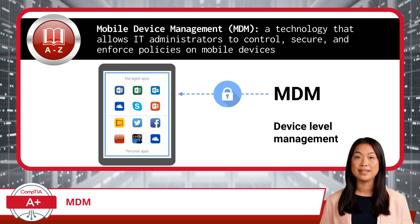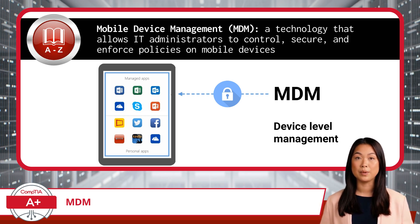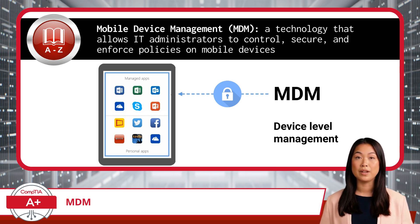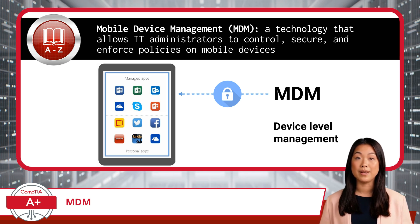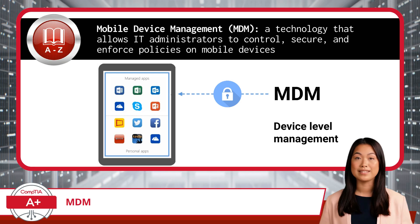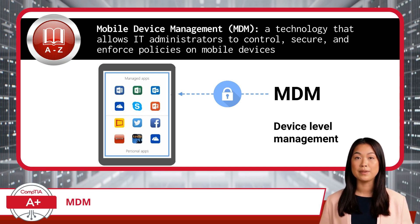Mobile Device Management enables the centralized management of device settings, ensuring that all mobile devices are configured to the organization's standards. A perfect example would be configuring corporate email accounts to use encrypted protocols only. It also allows for the monitoring and enforcement of compliance, like requiring two-factor authentication, as well as the ability to remotely lock, erase, or wipe the contents of a device that is lost or stolen, thereby protecting sensitive corporate information.